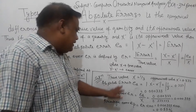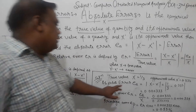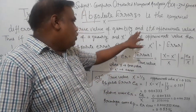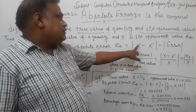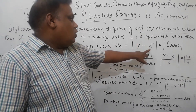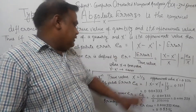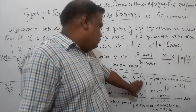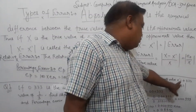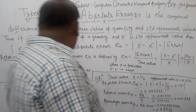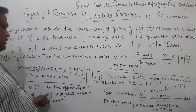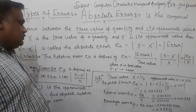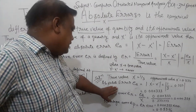We will find the true value of 1/3. Now, we get the relative and percentage error from the true value and the approximate value.